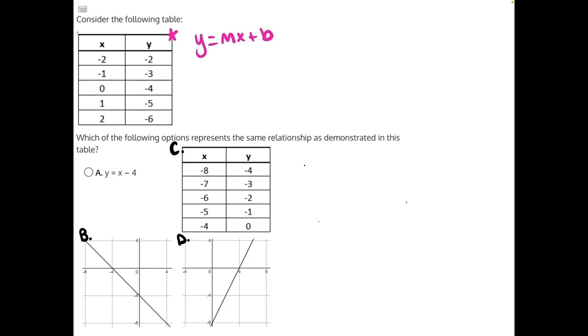And in this case, we're already given our b value, we're given our y-intercept, or where x is equal to 0, and that is negative 4. So if b is negative 4, we just need to figure out what our m is in order to have an equation.